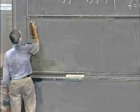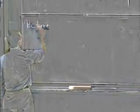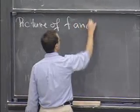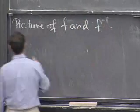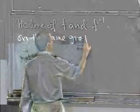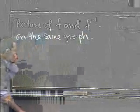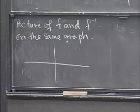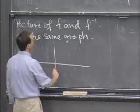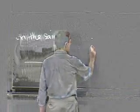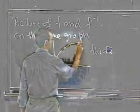So let's draw a picture of both f and f inverse on the same graph. So first of all, I'm going to draw the graph of f of x is equal to square root of x. That's some shape like this.